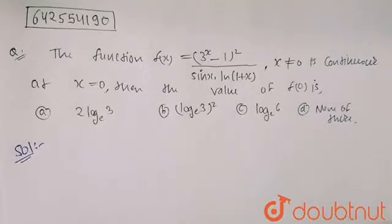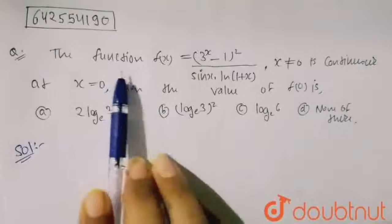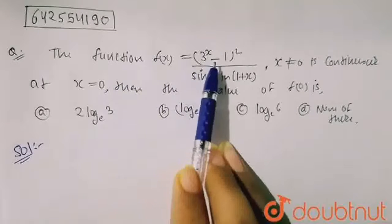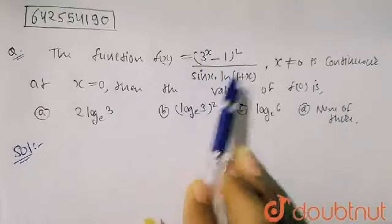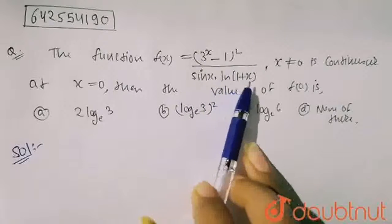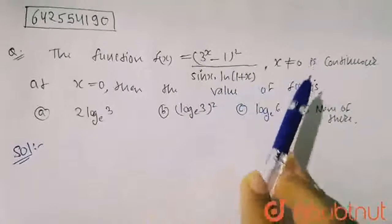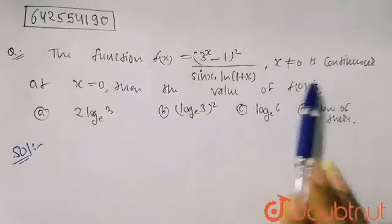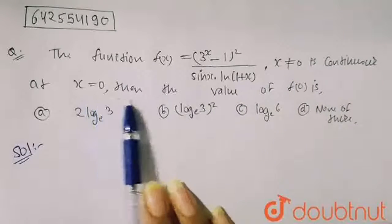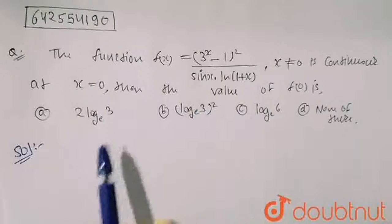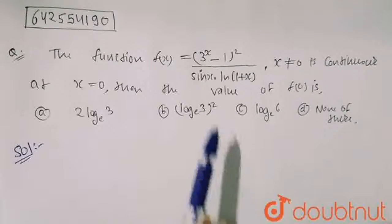Hello friends. In this question it is given that the function f(x) is equal to (3^x - 1)² upon sin x into ln(1 + x), where x is not equal to 0, is continuous at x equals to 0. Then the value of f(0) is — we have to find the value of f(0).